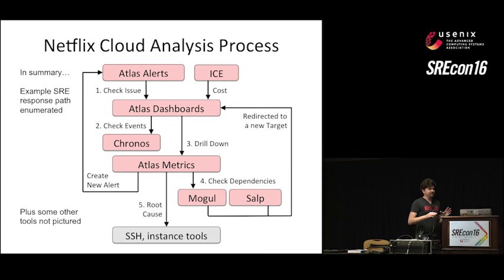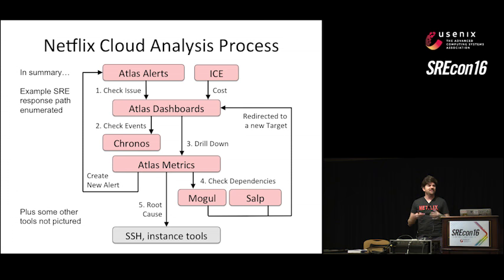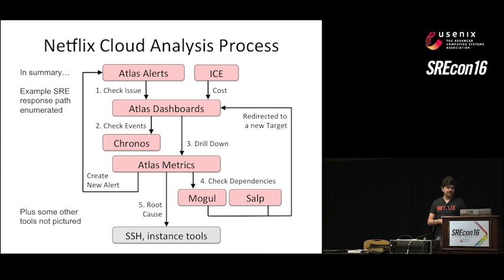At Netflix scale we have tens of thousands of instances, so when you're initially paged you don't know which instance to SSH onto — that's much later in the procedure.